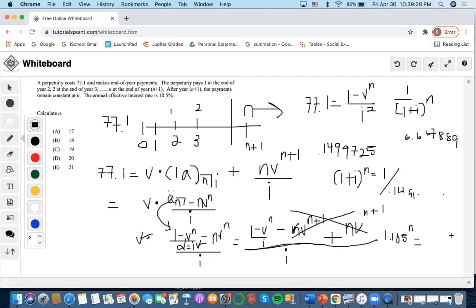So ln(6.667889) equals 1.89730318. Dividing by ln(1.105), we finally get n equals 19 as the answer.